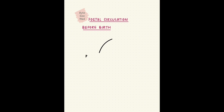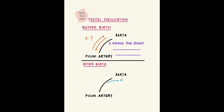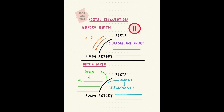Next up, fetal circulation. In fetal life, there are shunts in circulation — they are normally present. One of those shunts is between the pulmonary artery and the aorta. Your task is to recall what that shunt is called, which way blood flows through it during fetal life, what it forms after birth when it closes, and what the condition is called if it stays open. Pause the video here and take as much time as you need.